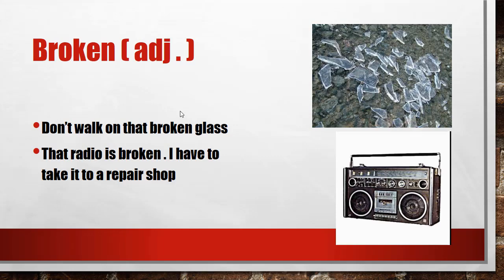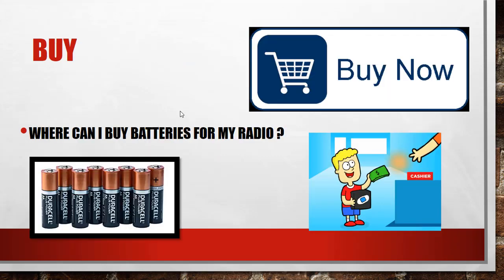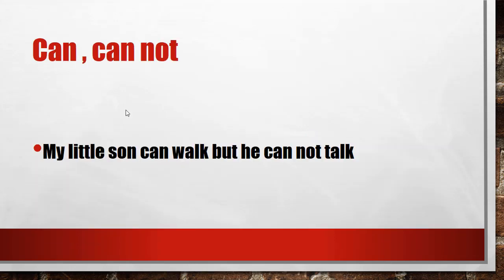Broken — 'Do not work on that broken glass. The radio is broken.' Broken means not functioning well, it doesn't work — 'I have to take it to a repair shop.' Can — 'Where can I buy batteries for my radio?' And the negative form: cannot — 'My little son can walk but he cannot talk.'